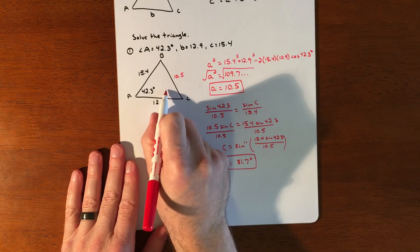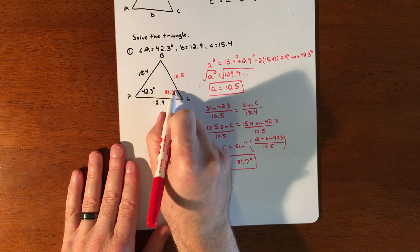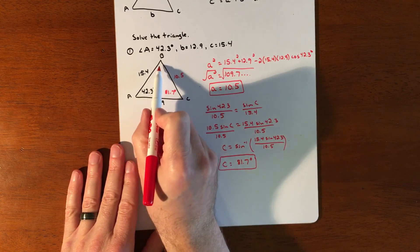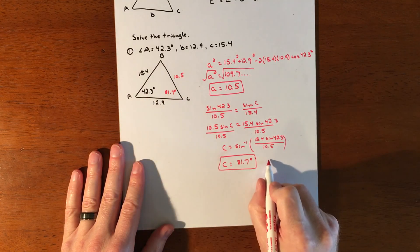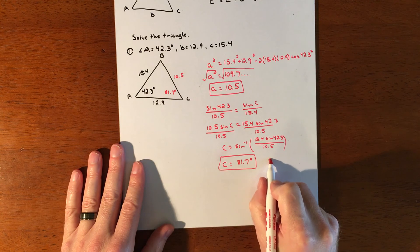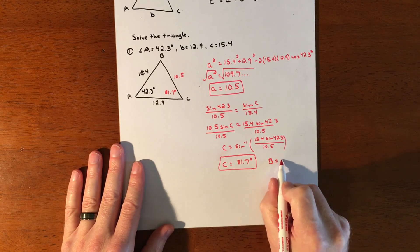Alright, so this is 81.7 degrees. And then to figure this thing out, we're just going to take 180 minus these two. So that means angle b is going to be about 56 degrees.